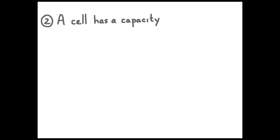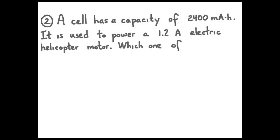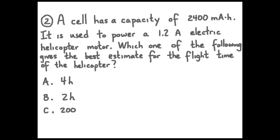Here's our second problem. A cell has a capacity of about 2400 milliamp hours. It's used to power a 1.2 amp electric helicopter motor. Which one of the following gives the best estimate for the flight time of the helicopter? For answers here, pause your viewer, try this question.